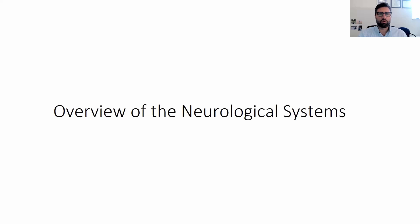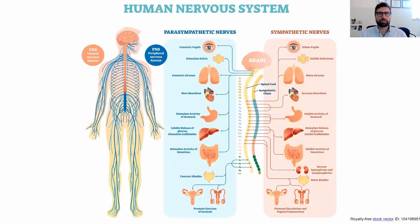Let's start with the overview of the neurological system. The neurological system is divided into two parts: the central nervous system and the peripheral nervous system. The central nervous system is the brain and spinal cord, and the peripheral nervous system is once the nerve leaves the spinal cord and goes down to the neuromuscular junction and the muscle. There's also a very important neurological system called the autonomic nervous system that controls the bladder, the bowel, the blood pressure, the heart rate, and so forth. This is also divided into central and peripheral. ATTR amyloidosis mainly affects the peripheral nervous system, but can also affect the central nervous system.